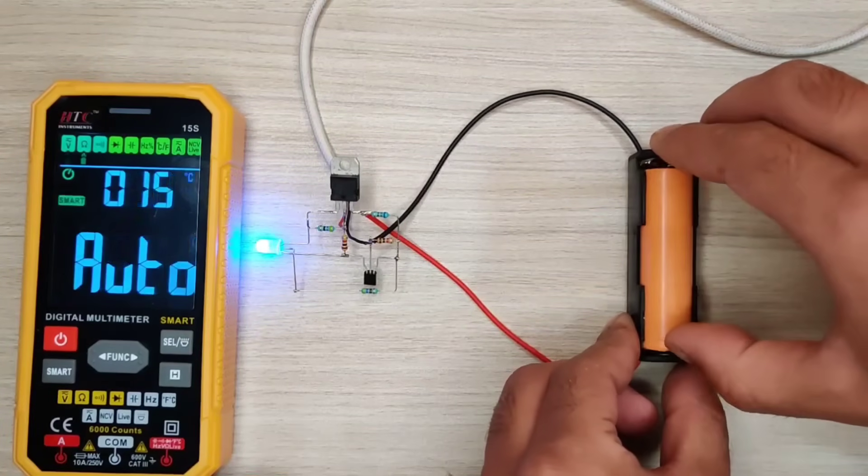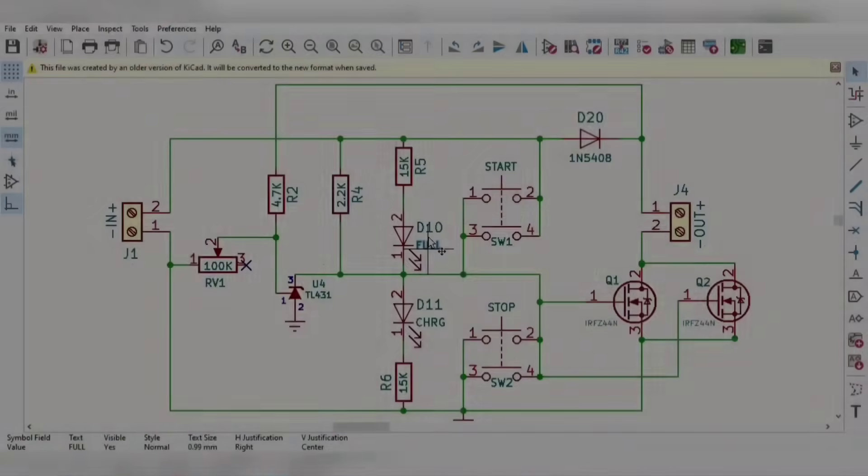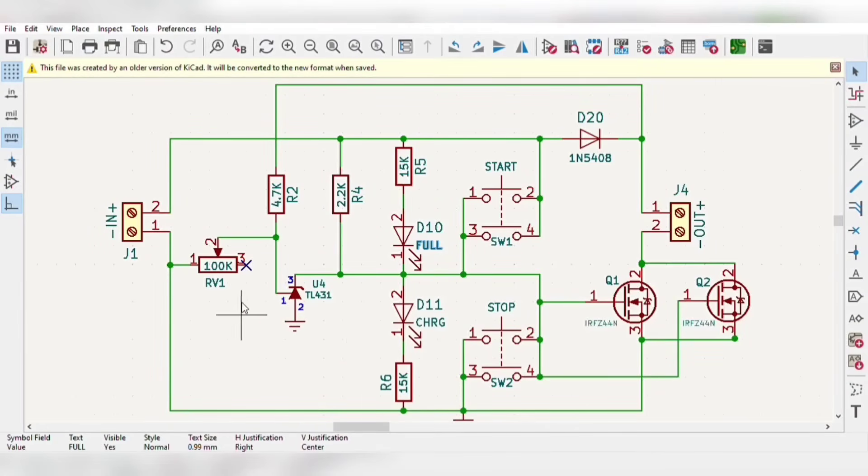And now if you want to charge more batteries simultaneously like 3 in series or up to 6 in series, I designed another circuit diagram with same TL431 shunt regulator but adjustable cut-off threshold, and this time using MOSFETs to deliver higher current, and added the smart start and stop function too.